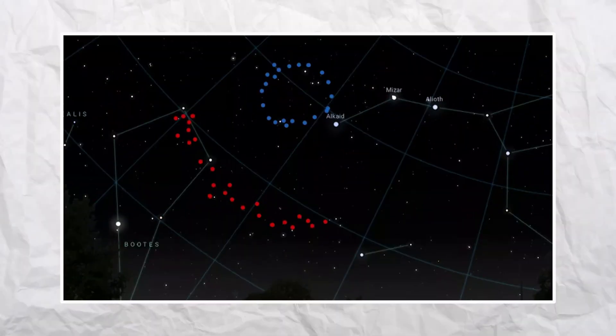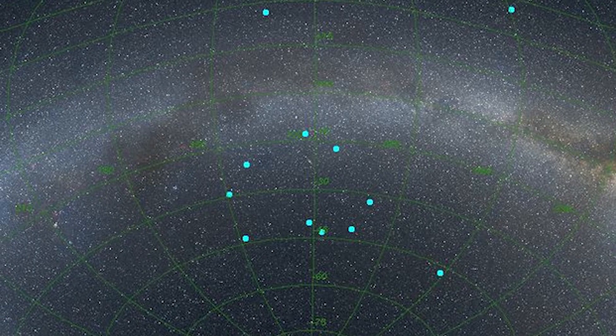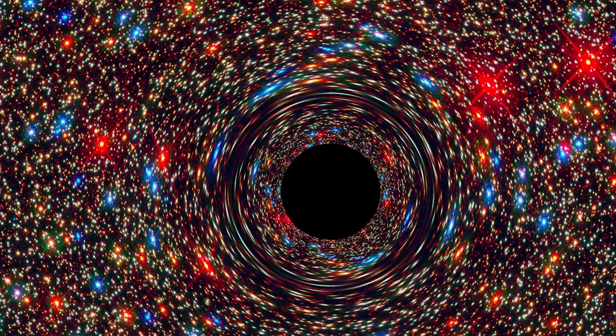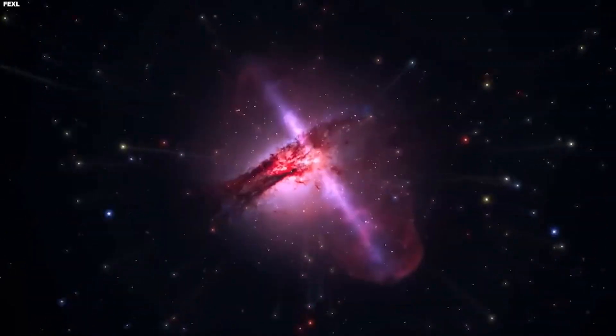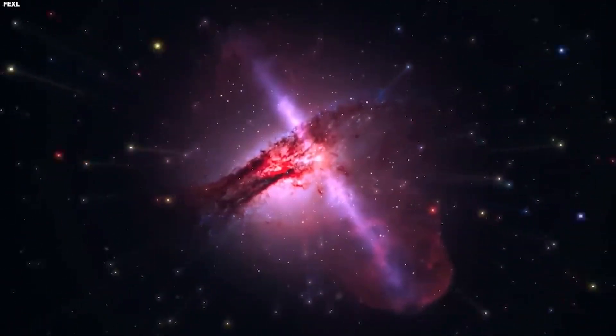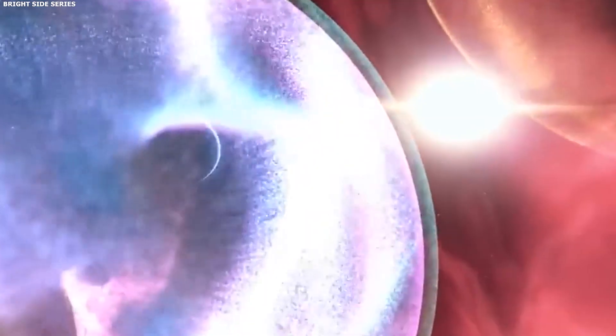There's also the Big Ring, a structure about 1.3 billion light-years in diameter discovered in 2024, and the giant arc, another massive structure over 3 billion light-years long. These things keep showing up in galaxy surveys, and every time one is discovered, cosmologists have to explain why their theory says it shouldn't exist.